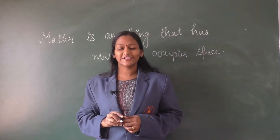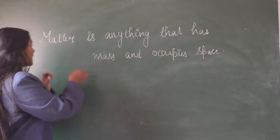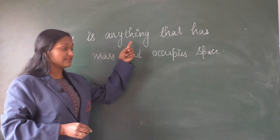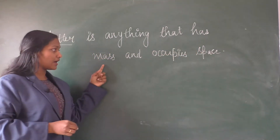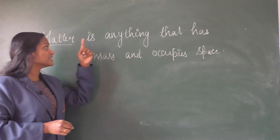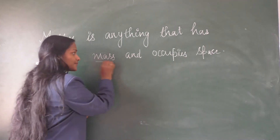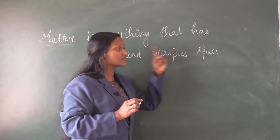We can say that everything we see all around us is made of matter. So how can we define matter? Matter is anything that has mass and occupies space. Let us repeat: matter is anything that has mass and occupies space.